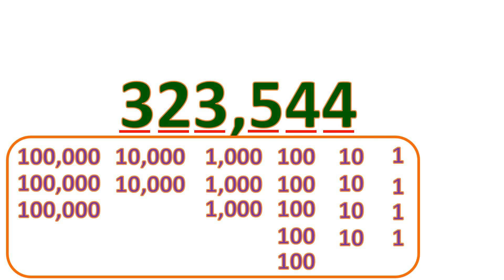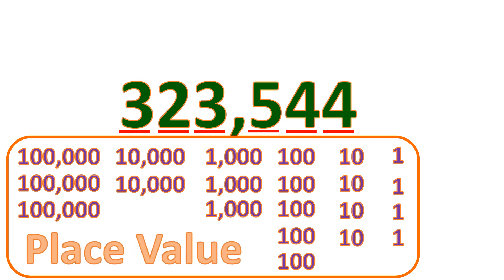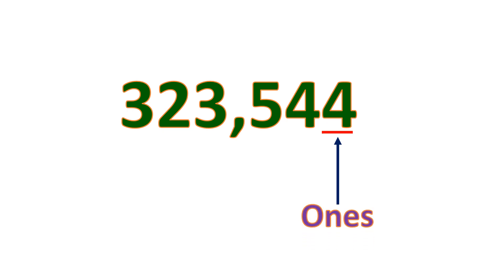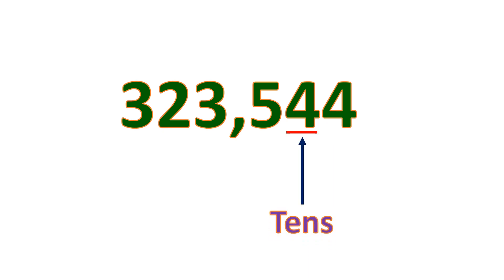And so we call them place value. So we have ones, tens, hundreds, thousands, ten thousands, and hundred thousands. This position is for the ones place, and this position is for the tens place, and this position is for the hundreds place.